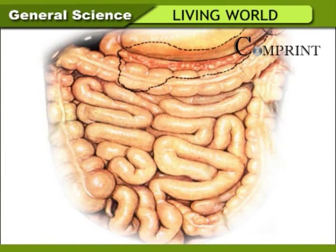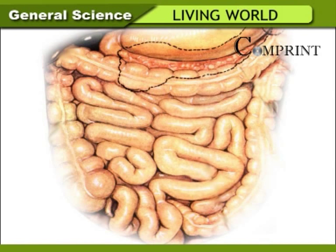Small intestine. It is a thin, narrow, pipe-like muscular structure. The part of the small intestine that begins from the stomach is called the duodenum. It is U-shaped. The remaining part of the small intestine is called the ileum. Ducts from the liver and pancreas open into the loop of the duodenum. Bile juice is secreted from the liver.